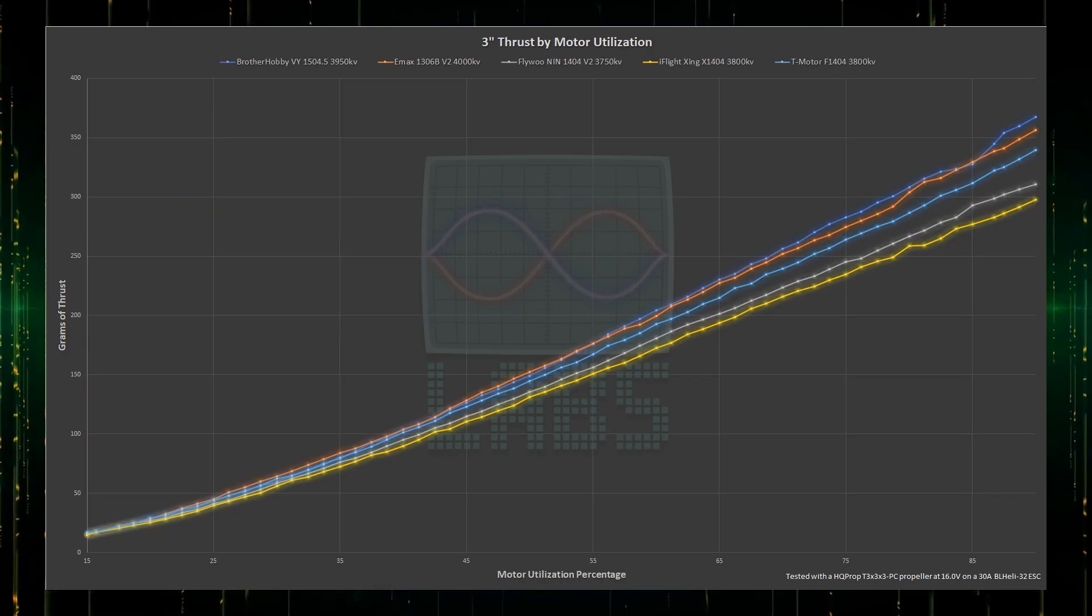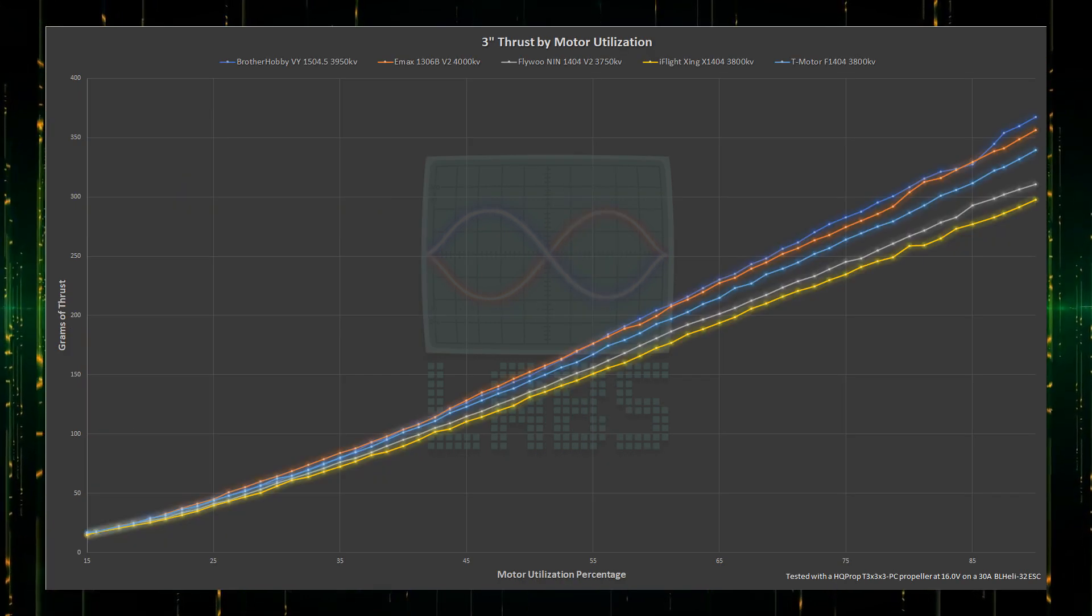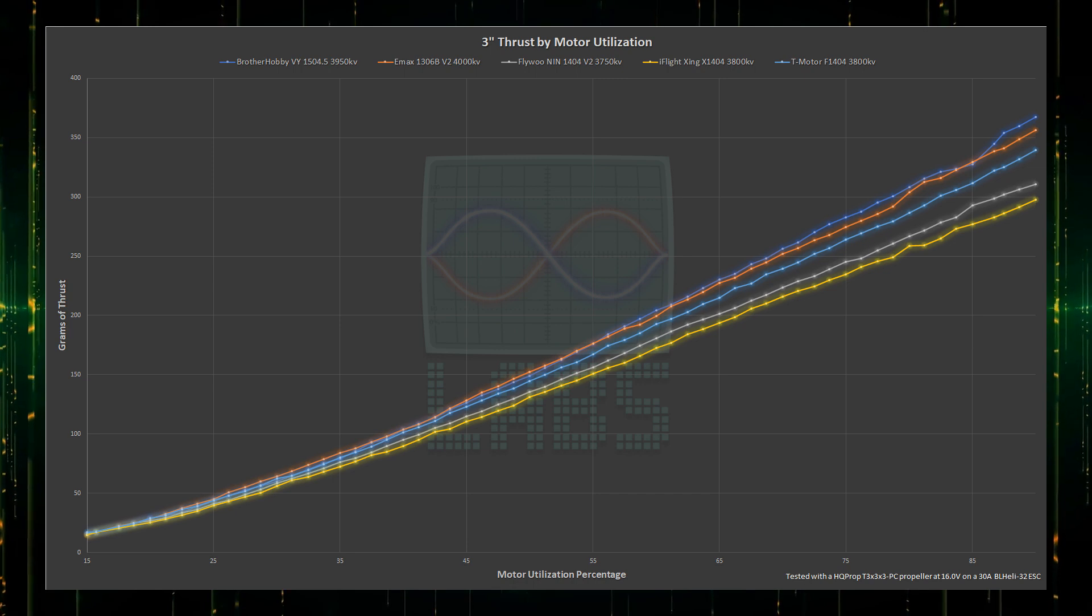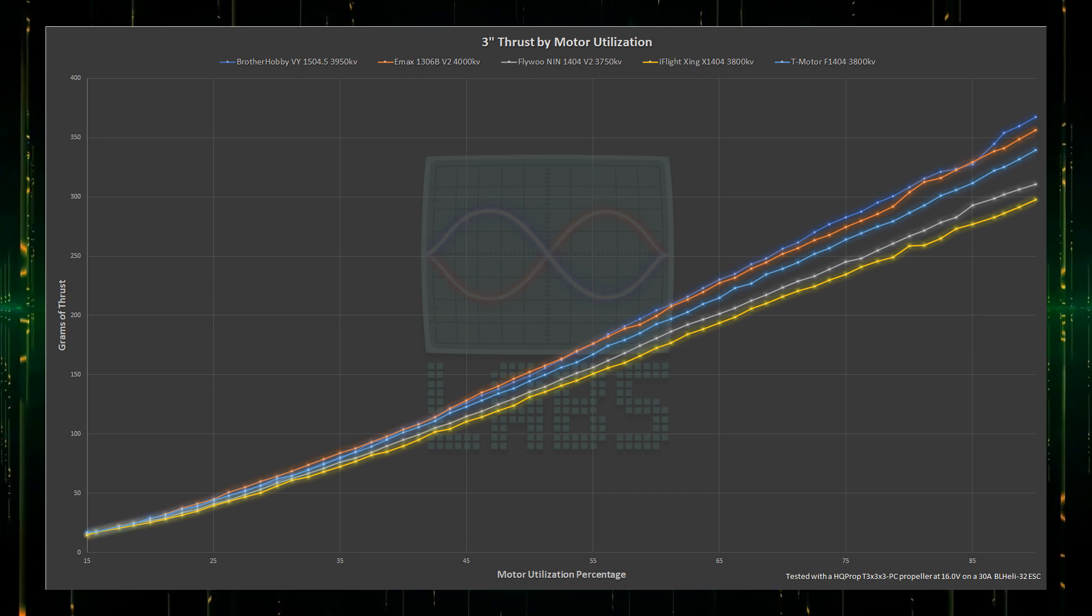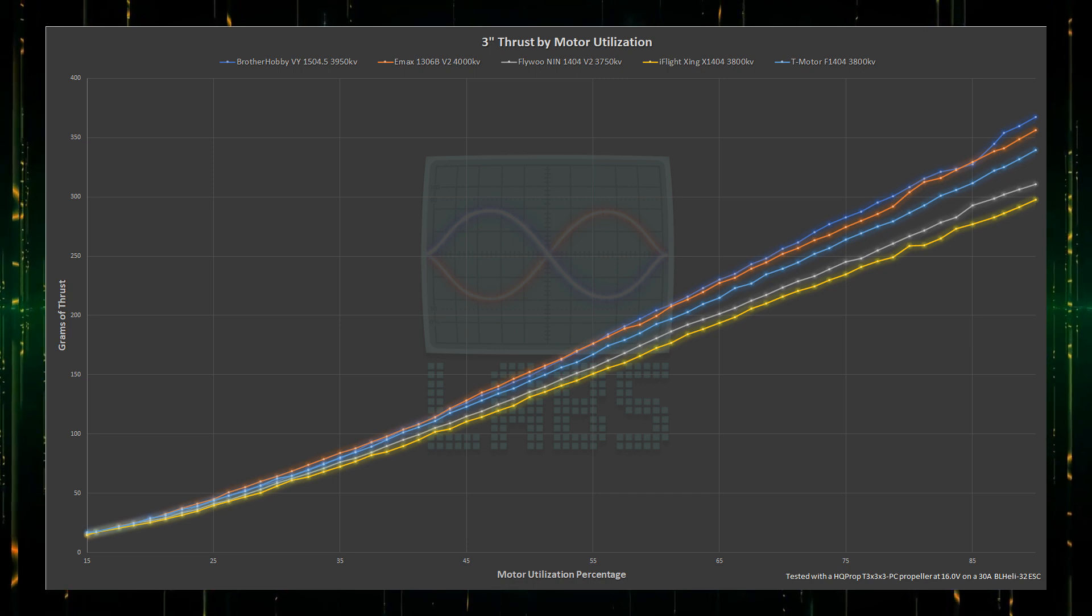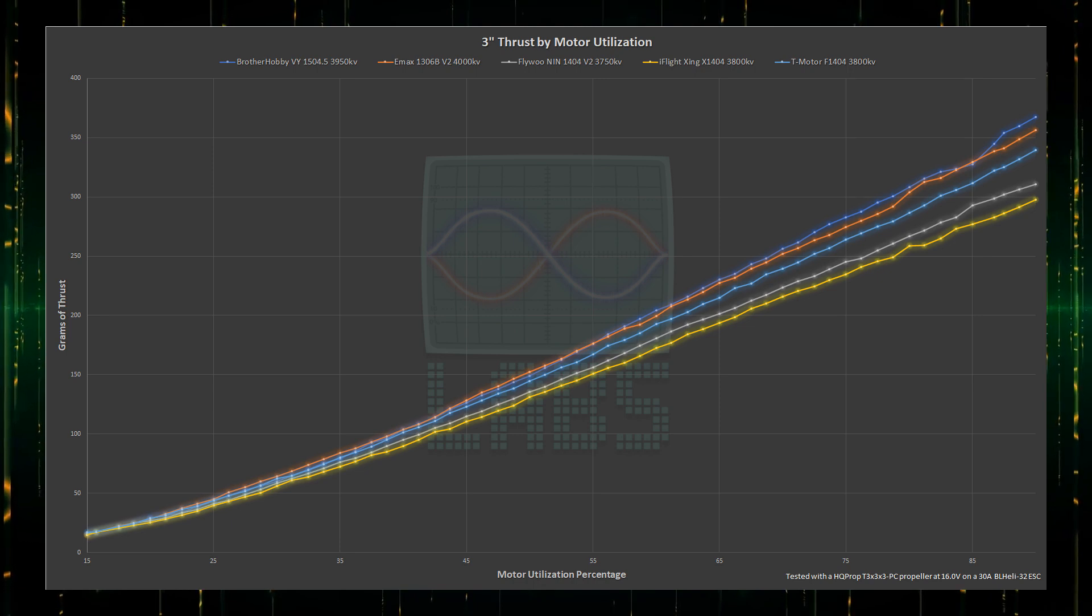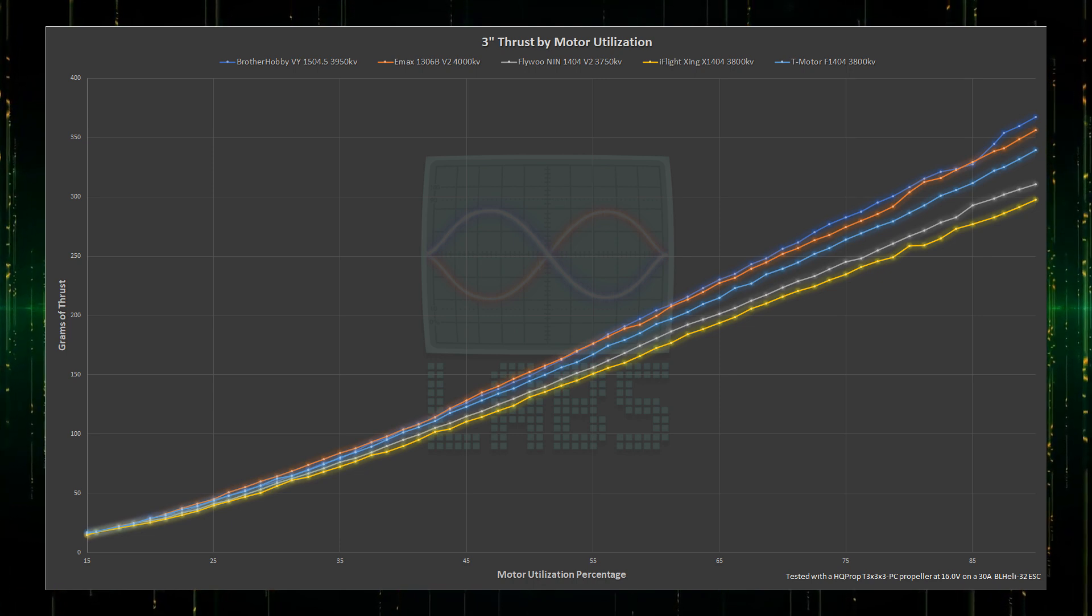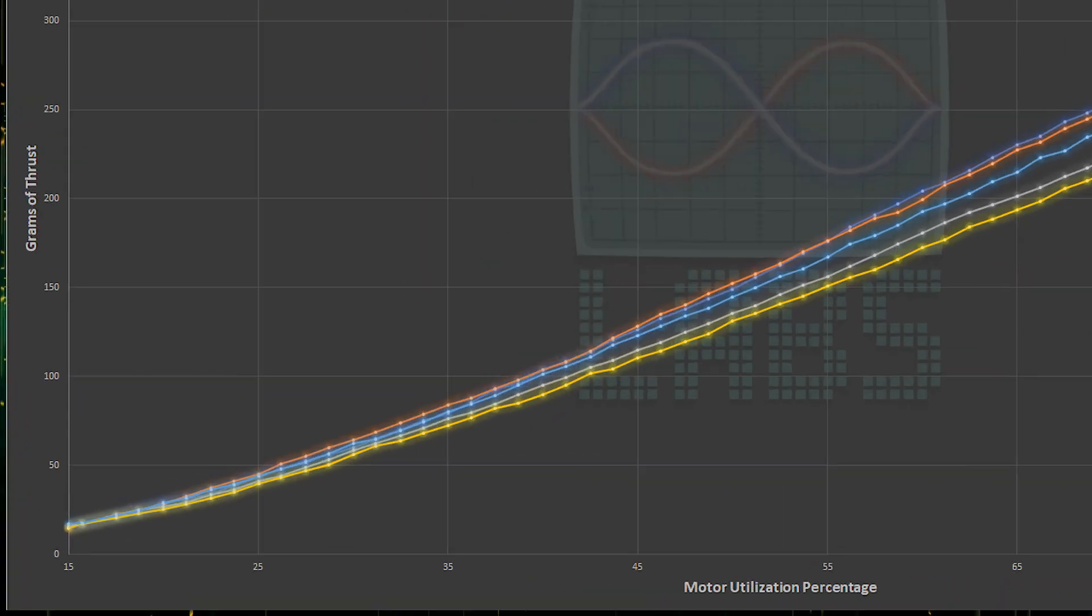Let's start with thrust. The EMAX takes the lead at the start, but at about 55% throttle, the Brother Hobby maintains a marginal overall lead. With the 1404 motors, the Flywoo and the iFlight motors are grouped at the bottom, with the iFlight performing the worst. The T-Motor is clearly ahead across the entire throttle range, closer to the heftier motors.